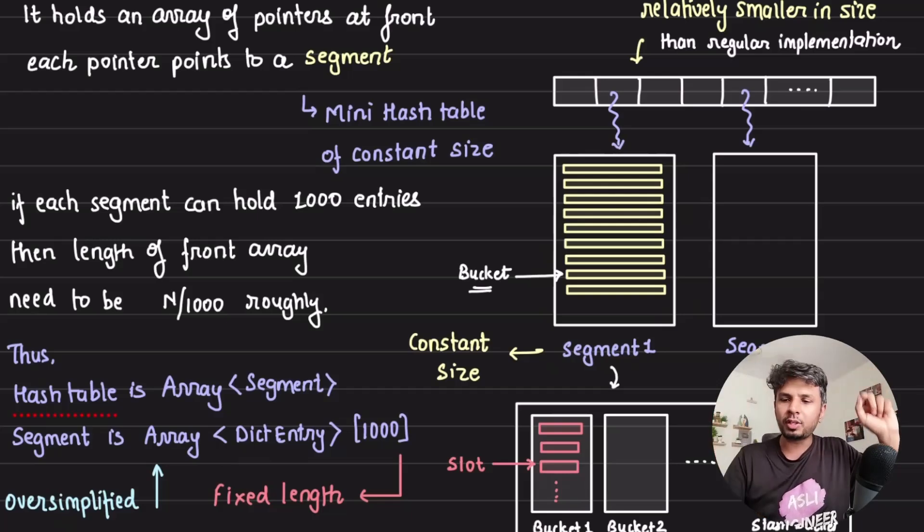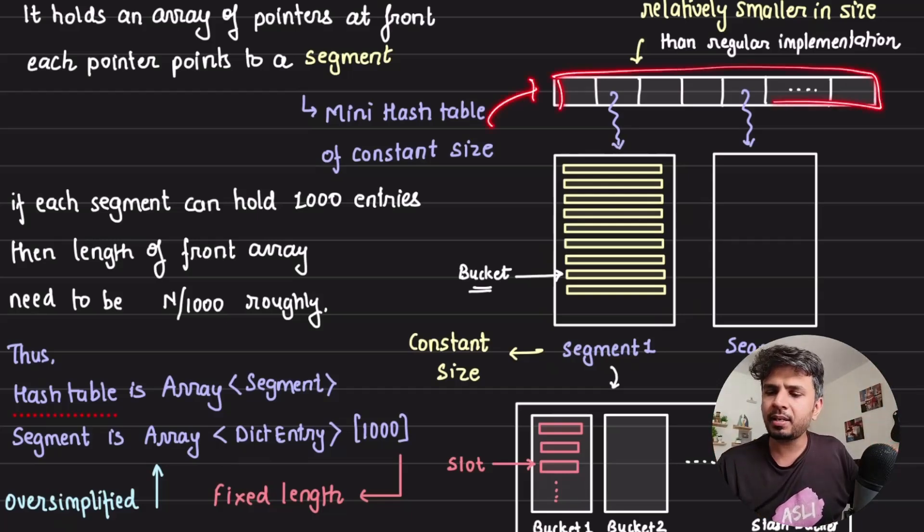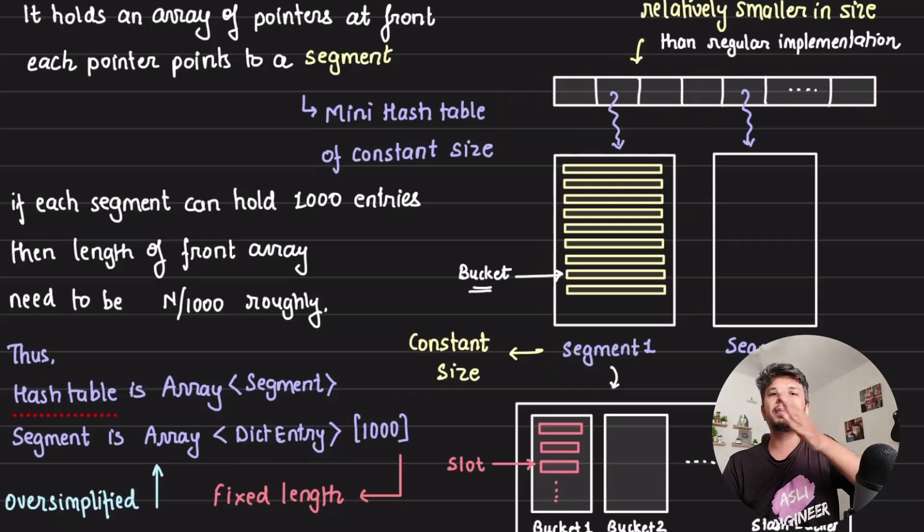Then my length of the front array can be just N divided by 1000 where N is my total entries. Each segment can hold 1000 entries, so my front array, which in case of a classic hash table implementation was pretty high, here it's literally N by 1000.